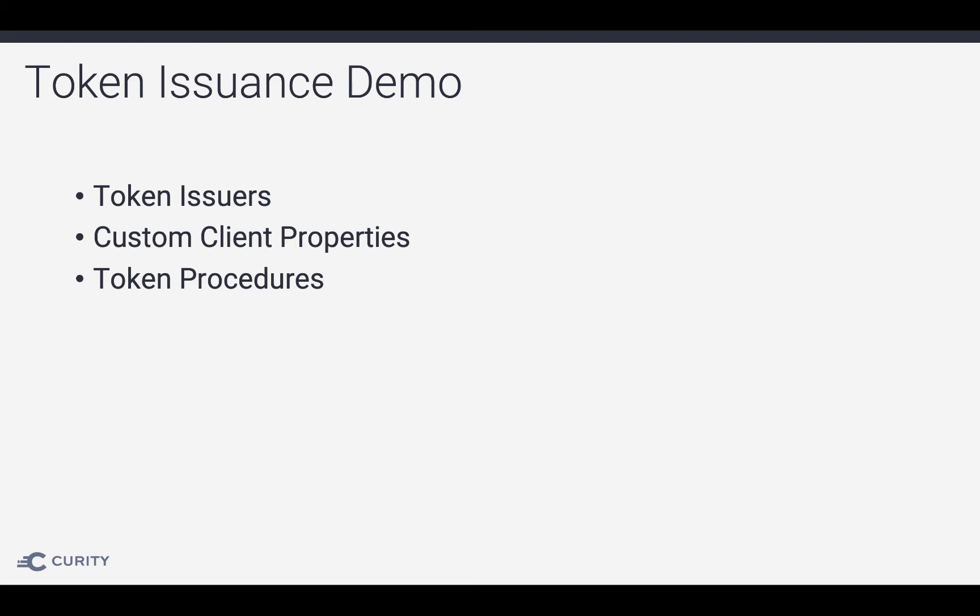In this demo we're going to go through how to issue tokens differently for different clients or different contexts. We're going to set up different token issuers and we're going to use custom client properties, which is new since Security 4.4, and we're also going to modify the token procedures in order to do this.